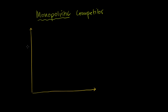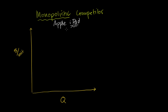I'll draw it nice and big. On this axis right over here, I'm going to plot dollars per unit — price is revenue per unit, cost per unit, and things like that. And on this axis, I'm going to have quantity produced in a given period of time. We're going to speak in fairly general terms. Let's assume that our monopolistic competitor is Apple and its iPads. I want to emphasize, I'm not making any accusations that Apple is a monopolist here — they just have a differentiated product, so they are monopolistic competitors.